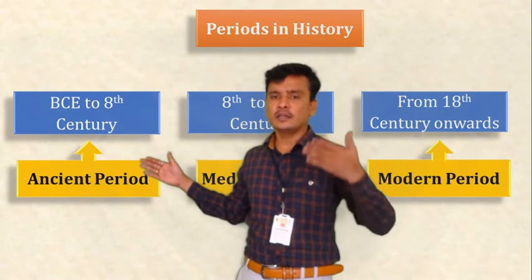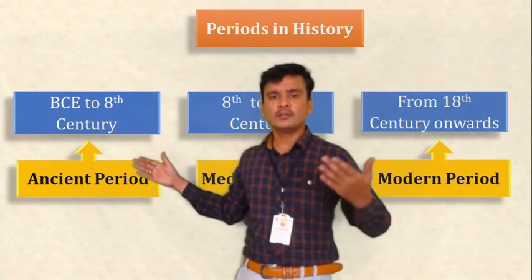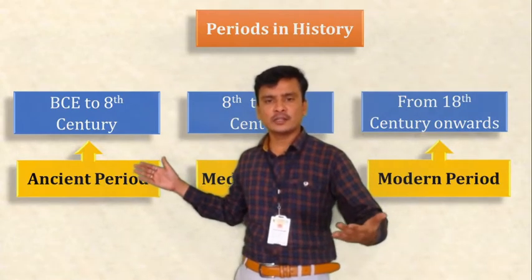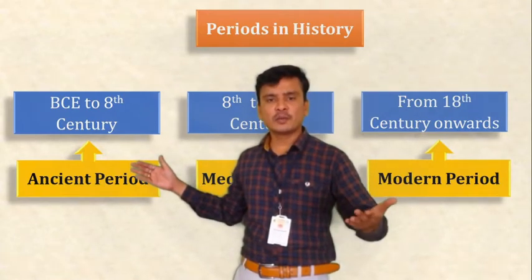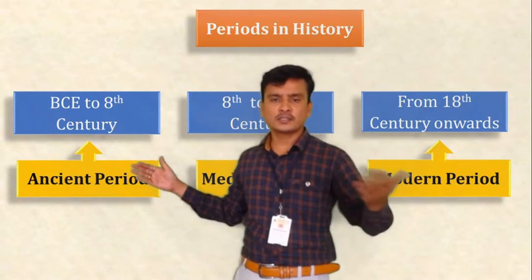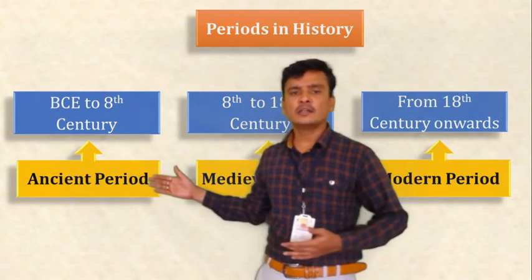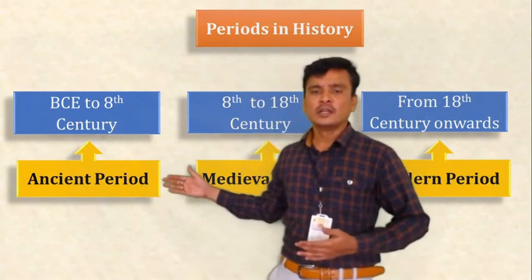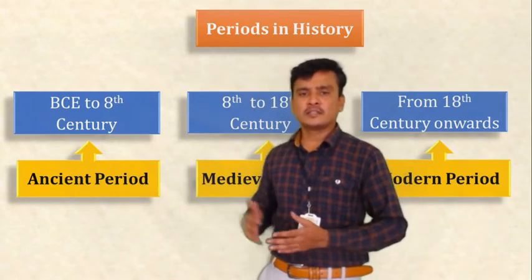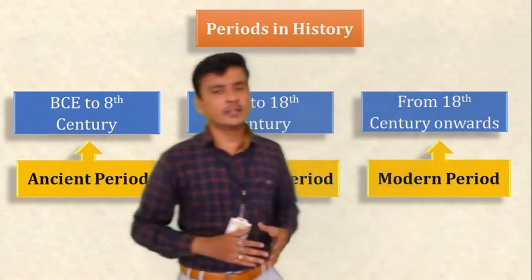In BCE, the civilization period is there, then the Vedic period, then the Gupta period, Maurya, Kushana, and so on — a number of periods are there till the 8th century, and all of that is the ancient period. The second one is the medieval period.